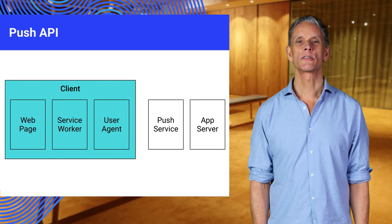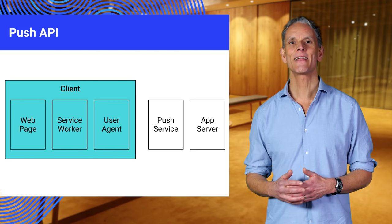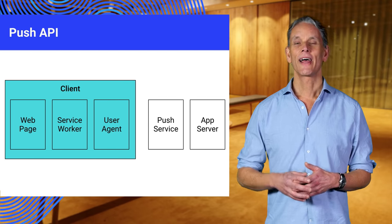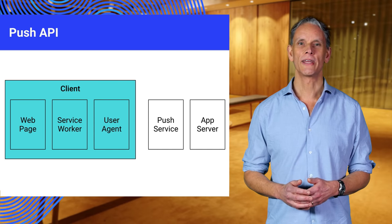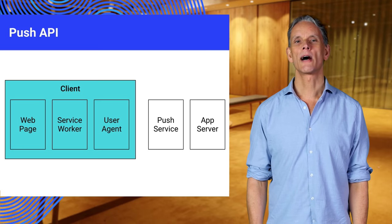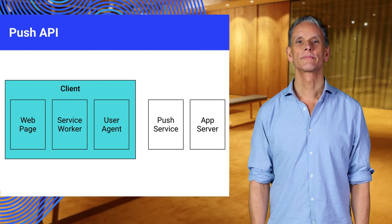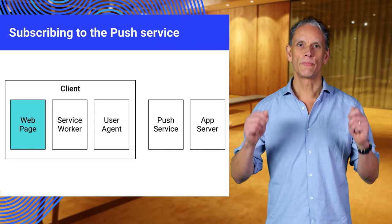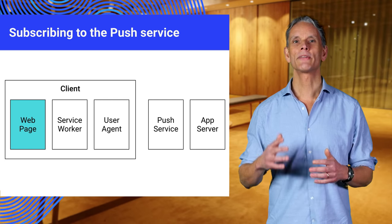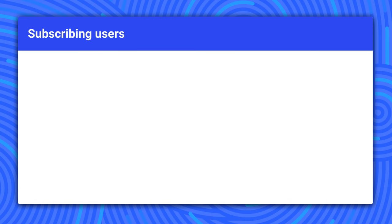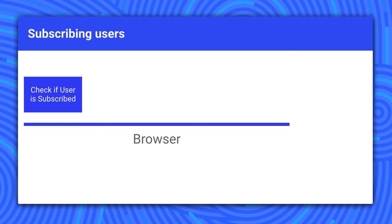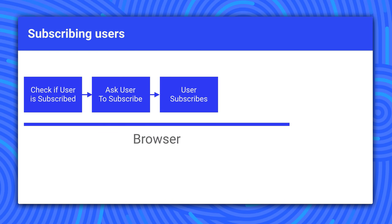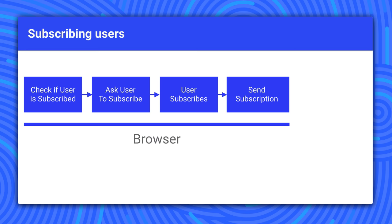The Push API allows users to subscribe to messages sent from your app server via the push service used by the browser. Subscribing is done in the JavaScript for the page, while responding to push events — for example by displaying a notification — is done in the service worker. In the page JavaScript, we check if the user is already subscribed and update the page UI accordingly. If they are not subscribed, prompt them to subscribe. If they are already subscribed, update the server with the latest subscription, since that may have changed by the push service since it was last used.